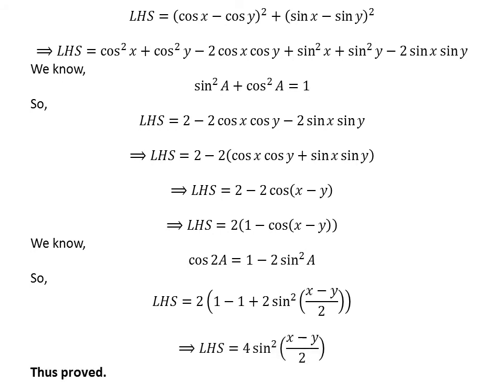As 1 and minus 1 cancel each other, the left hand side equals 4 times the square of sine of x minus y upon 2, which equals the right hand side of the given equation. So we have proved the given equation.